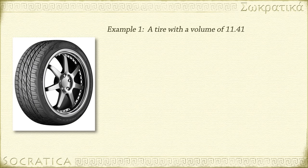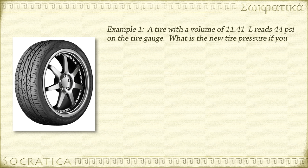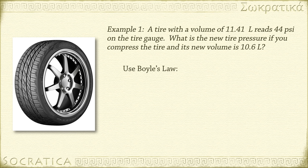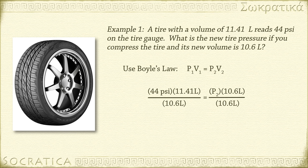A tire with a volume of 11.41 liters reads 44 psi on the tire gauge. What is the new tire pressure if you compress the tire and its new volume is 10.6 liters? Write out Boyle's law and substitute in what we know: P1V1 equals P2V2. So 44 psi times 11.41 liters equals P2 times 10.6 liters. Divide both sides by 10.6 liters: P2 equals 47.36 psi. There are two significant figures in the measurement 44 psi, so we round our answer to two sig figs: 47 psi.